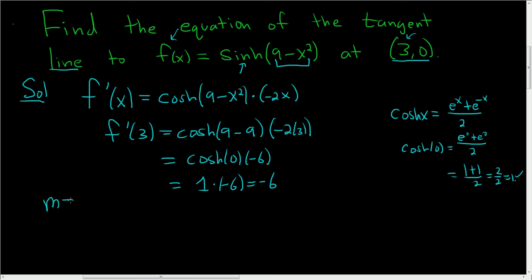So now this is our m, and we have our x1 and our y1, that's equal to 3 comma 0. So we just use the point slope formula for a line. y minus y1 equals m times x minus x1. So y minus 0 is equal to, well, m is negative 6, and here we have x minus 3.